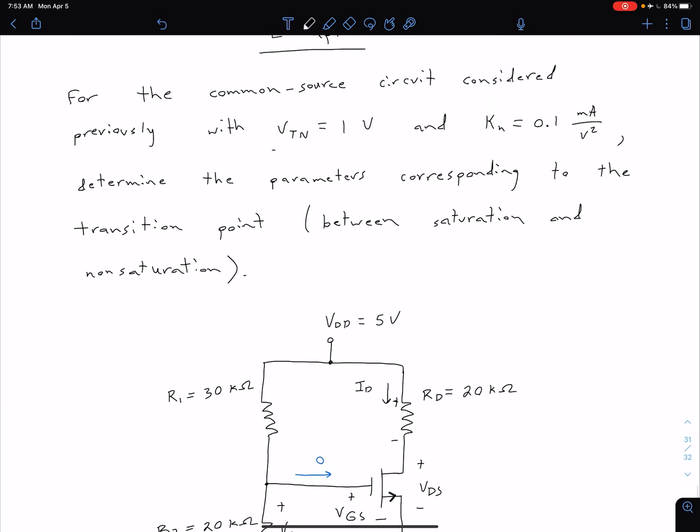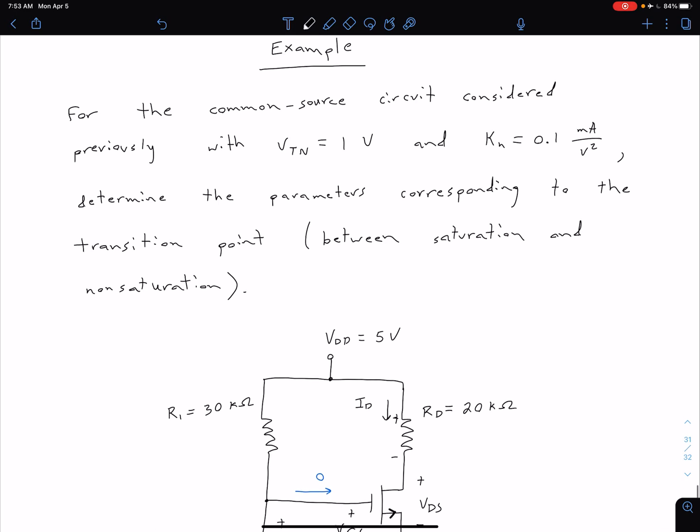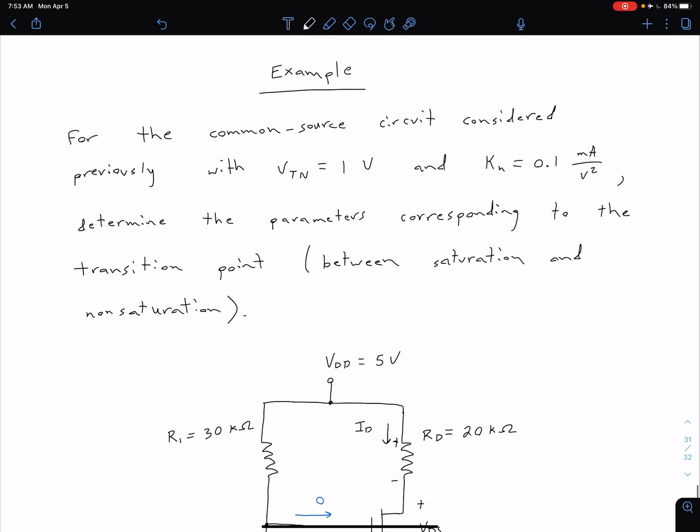We were also told that we had a threshold voltage of 1 volt and a conduction parameter of 0.1 milliamps per volt squared. And so what we want to do is to determine the parameters corresponding to the transition point, so the transition point between saturation and non-saturation.